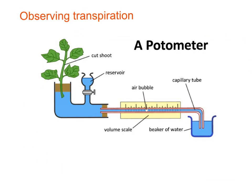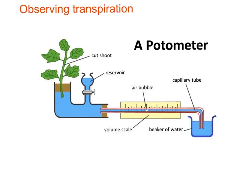We can observe transpiration using a device called a potometer. We take a leafy shoot of a plant and put it into a well of water — it has to be cut underwater, otherwise air gets into the xylem and the whole process stops. As the water evaporates from the leaves in transpiration, it draws more water into the stem. By monitoring what an air bubble does in the tube, we can see how quickly transpiration is progressing.